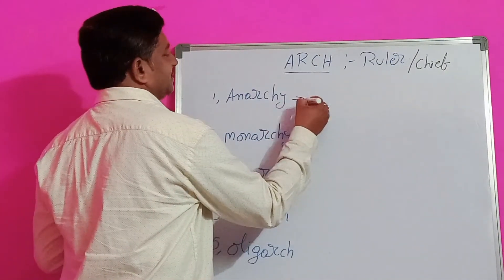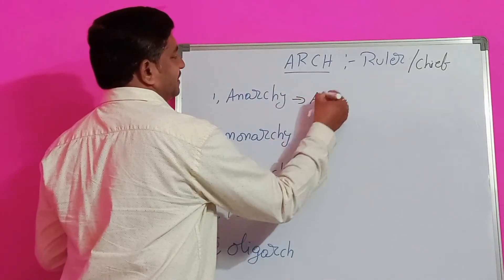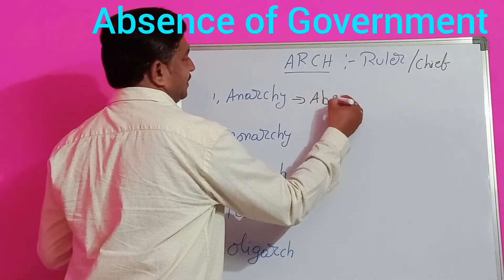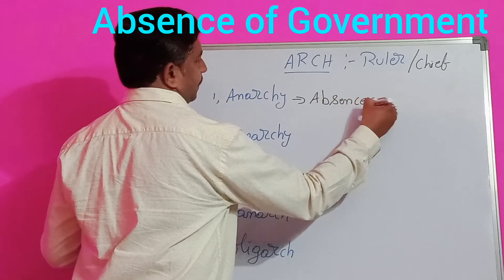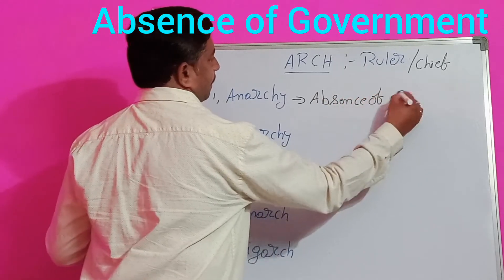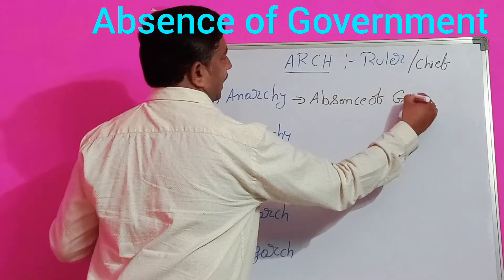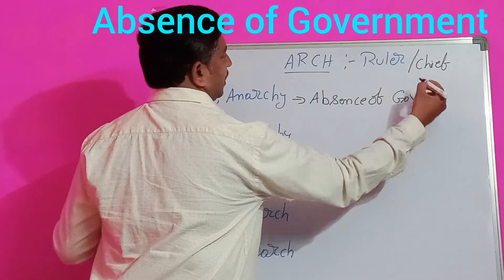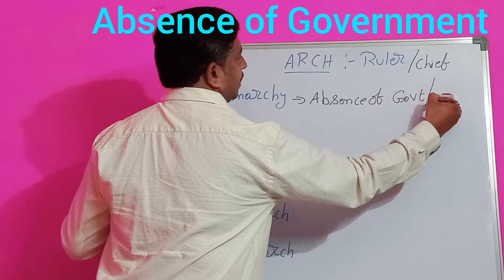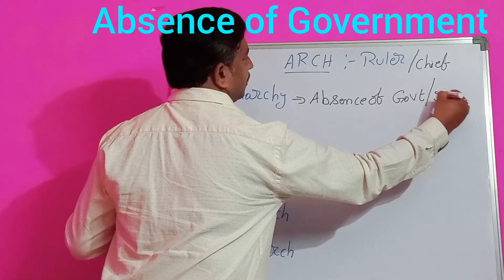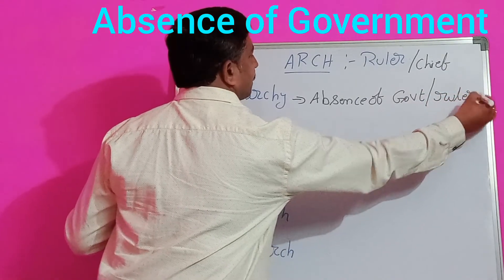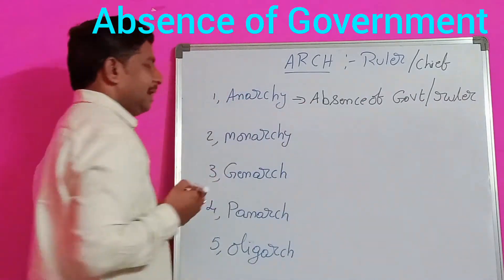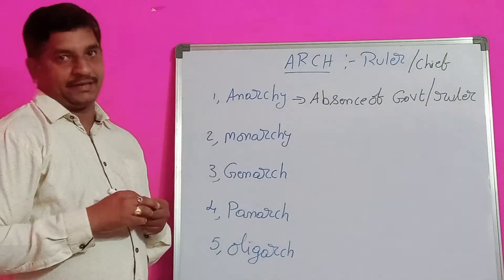Anarchy. Anarchy means absence of government. Absence of government or ruler is called Anarchy.